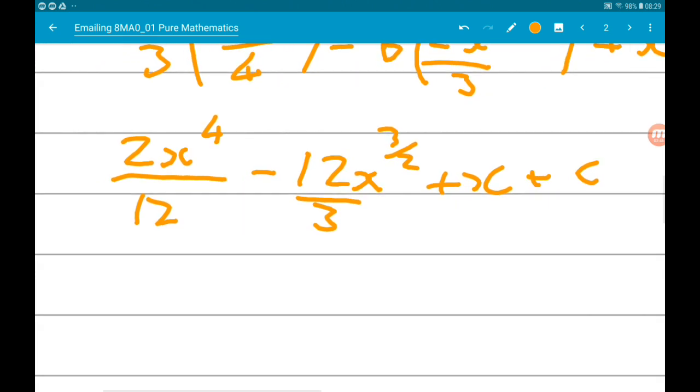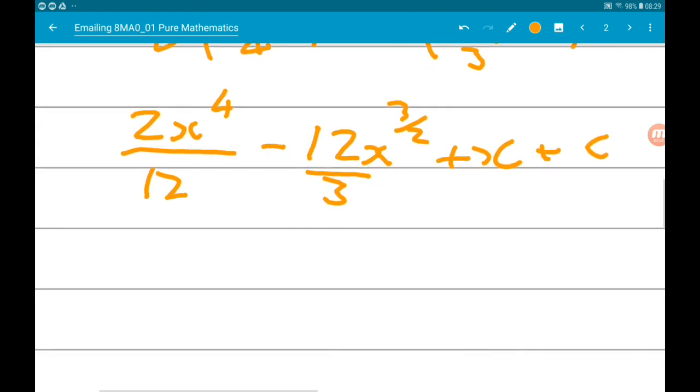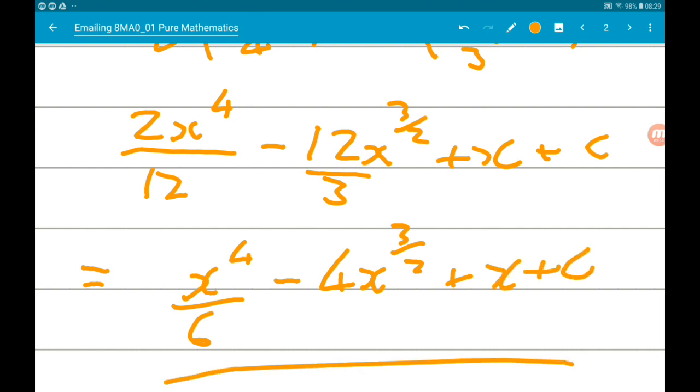Now we just need to simplify these fractions. So 2 over 12 has a common factor of 2. So this goes down to x to the power of 4 over 6. 12 over 3 is 4, so we get minus 4 x to the 3 halves, add x, add c.